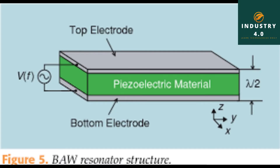Introduction: Bulk Acoustic Wave, BAW, filters play vital roles in wireless devices and infrastructure. They ensure separation between the ever-growing number of frequency bands and deliver low insertion loss to support device performance. The worldwide rollout of 5G and the development of other wireless standards, for example Wi-Fi, generate new filtering challenges that are outside the capabilities of traditional acoustic filters. Noteworthy developments in BAW technology were necessary to resolve these new challenges.